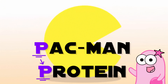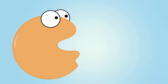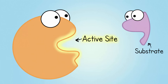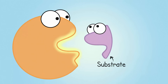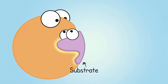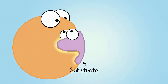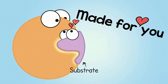In the game, there are these little pebbles that Pac-Man goes after. Well, enzymes have a specifically shaped area called an active site where items can bind. The items are called substrates. It's very specific binding because the active site is specifically shaped for the substrate that binds there.